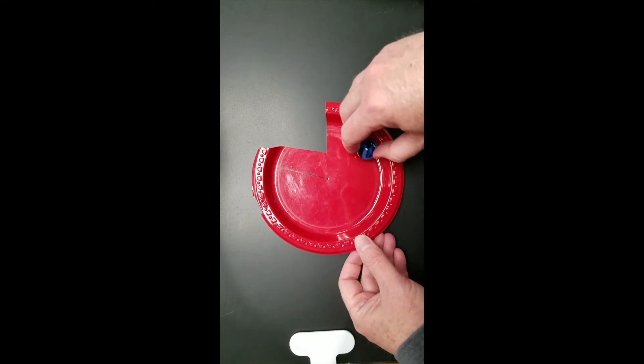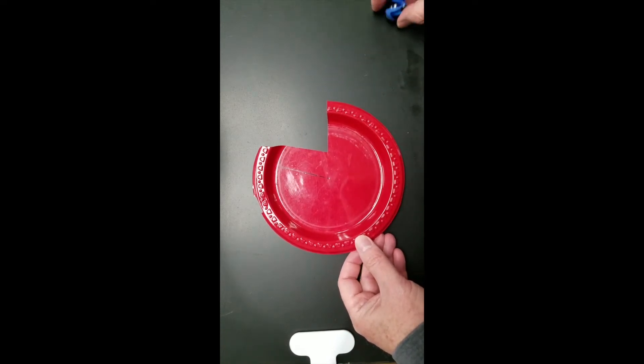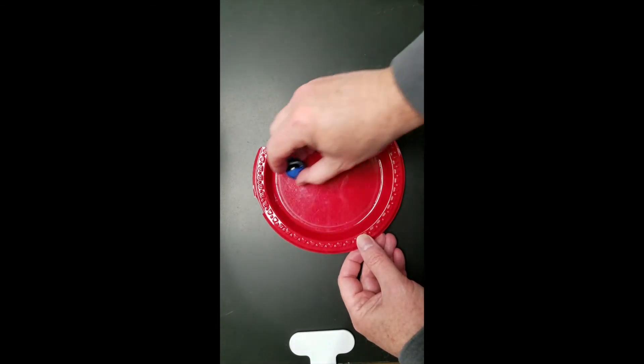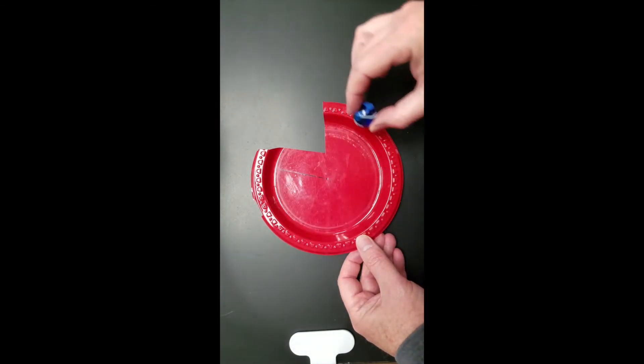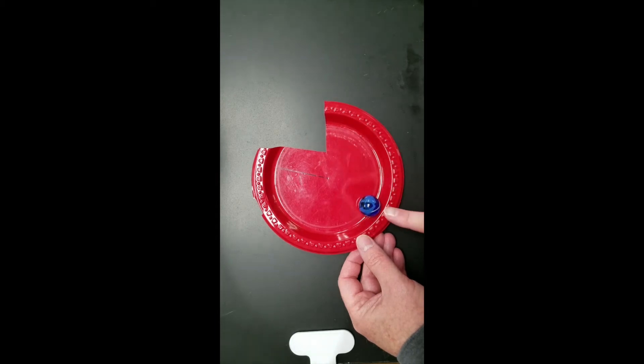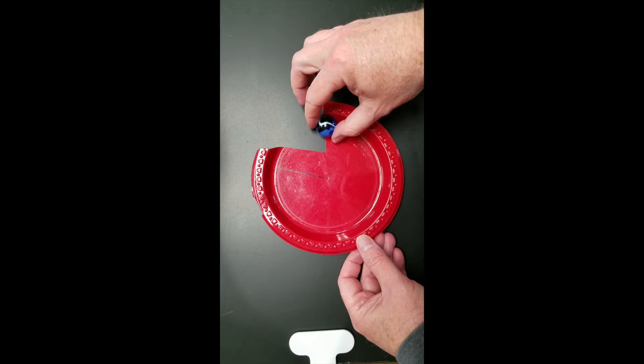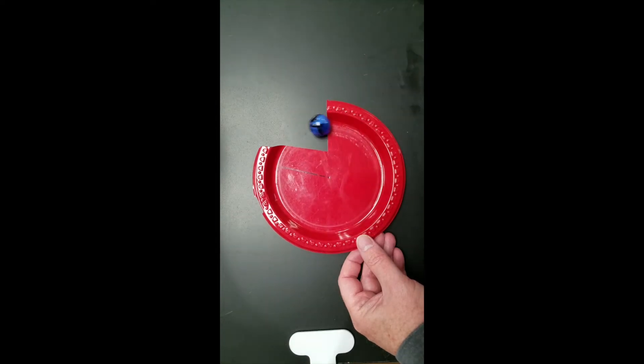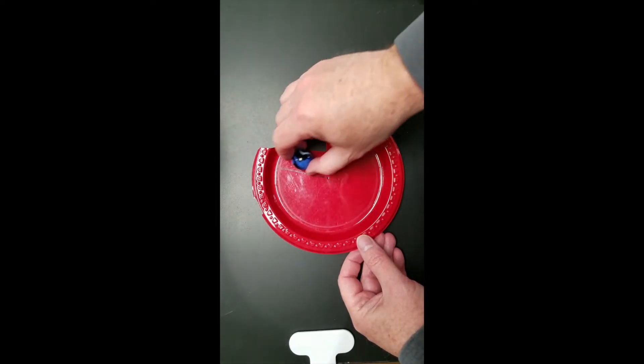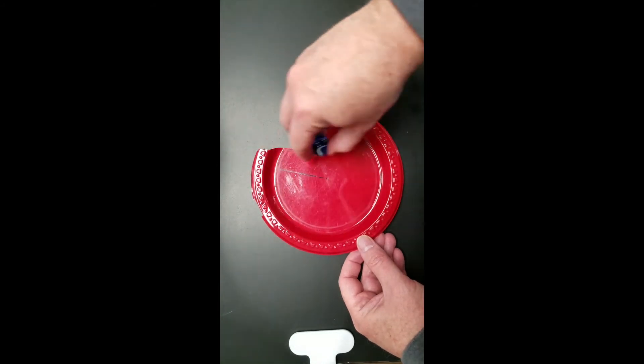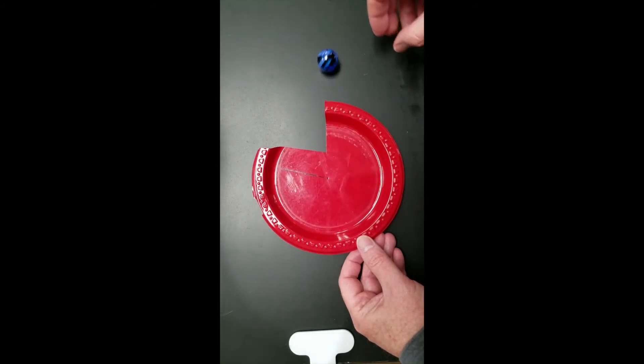See, here we have a plate, and notice that as the marble goes around, it can stay in a circle as long as the side of the plate's there, because the side of the plate's pushing in on the marble. But as soon as it gets to the point where there's no longer that side there, it goes rolling off in a straight line. So things want to go on a straight line unless they're forced to go in a circle.